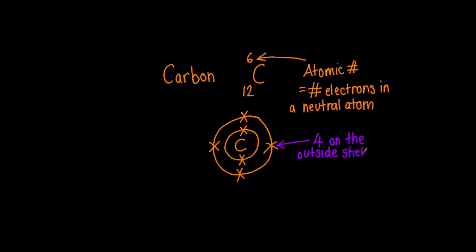But please note that on the second shell, for it to be stable, it needs to have eight electrons. This leads us to the question of how carbon will achieve stability.